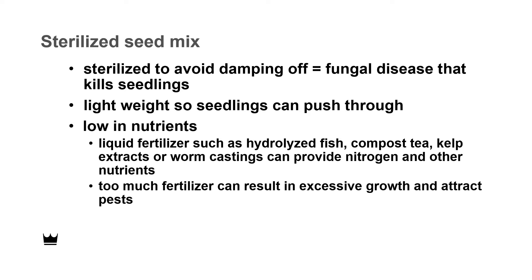A liquid fertilizer such as hydrolyzed fish, compost tea, kelp extract, or worm castings can provide nitrogen and other nutrients. Remember, though, that too much fertilizer is undesirable because it can result in excessive growth and attract pests.